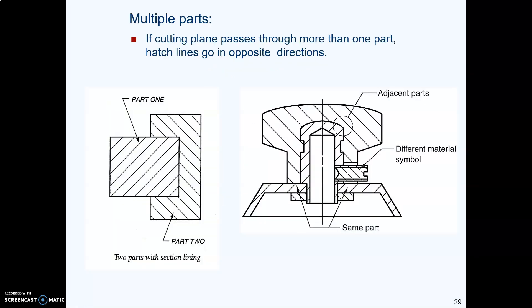Now, if you have more than one part coming together in a section view, what you do is you make the hatch pattern go in opposite directions or at least in different directions. And that clearly illustrates that these are two different objects. But be careful, do not go in two different directions if it's all one part. That'll confuse people. Only go different directions if these really are two different objects.